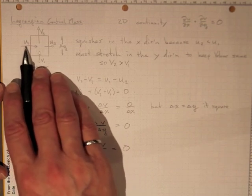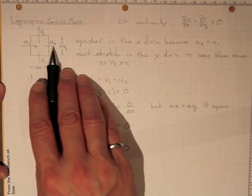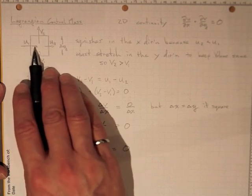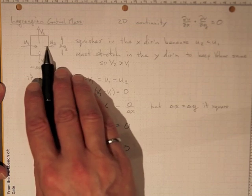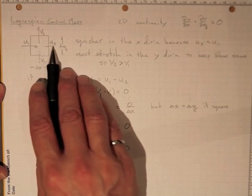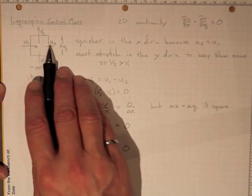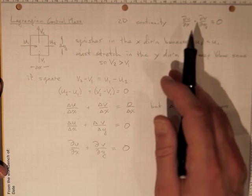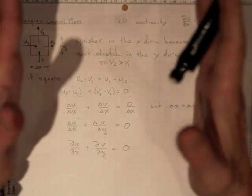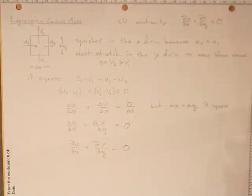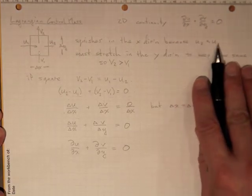What's happening here is if that velocity is bigger than that velocity, the u velocity component on this side is bigger than the u velocity component on that side, then this is going to move faster than that does and the whole control mass is going to squish in the x direction because u2 is greater than u1.